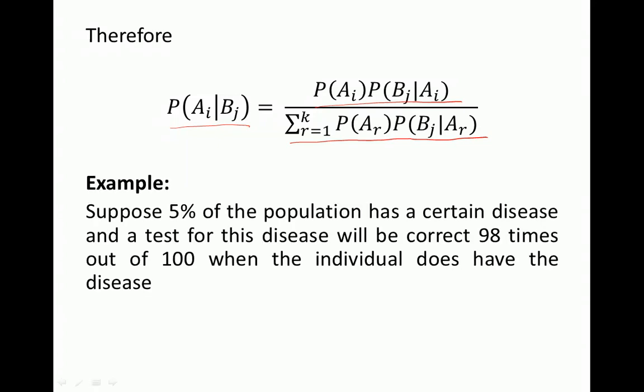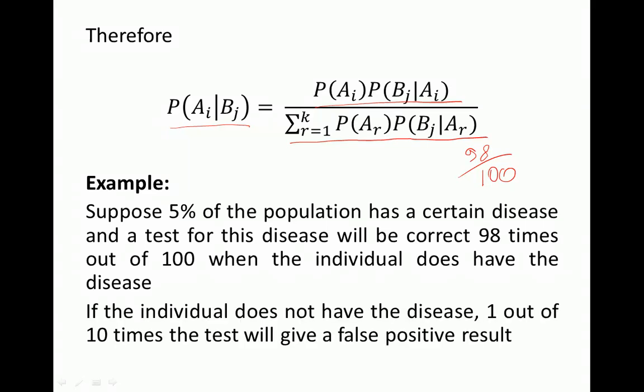Now I will talk about an example. Suppose 5% of a population has a certain disease, and we have a test which is correct 98 times out of 100 when the individual does have the disease. If you test sick individuals, 98 times the test correctly identifies the disease, and 2 times out of 100 it will incorrectly say the individual does not have the disease. If the individual does not have the disease, the test fails 1 out of 10 times, giving a false positive result.